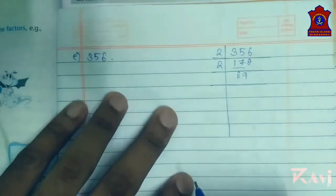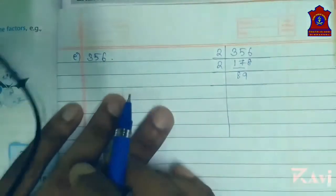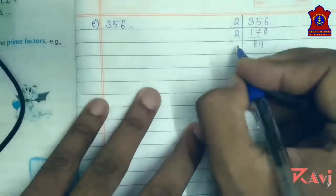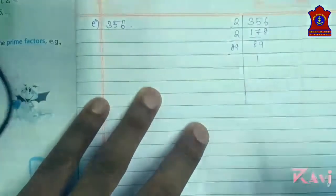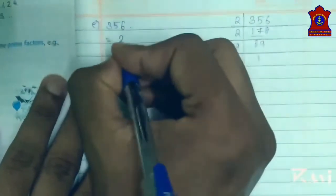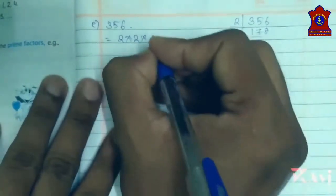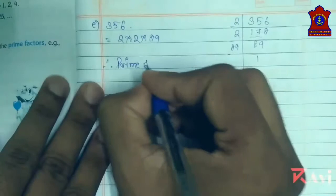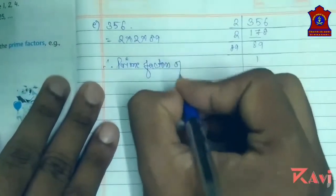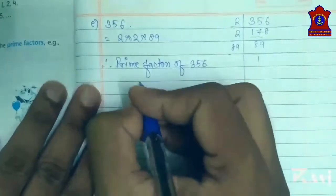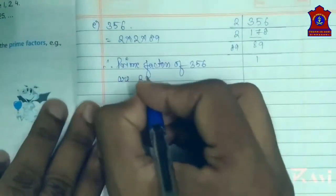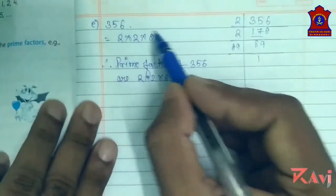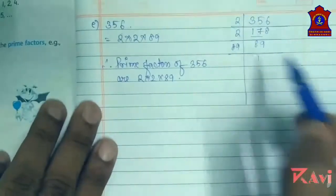Now we have 89. Check whether 89 is a prime number or a composite number. 89 is a prime number. So 89 ÷ 89 = 1. The factors are 2 × 2 × 89. Therefore the prime factors of 356 are 2 × 2 × 89. Keep in mind: all the factors must be prime numbers.